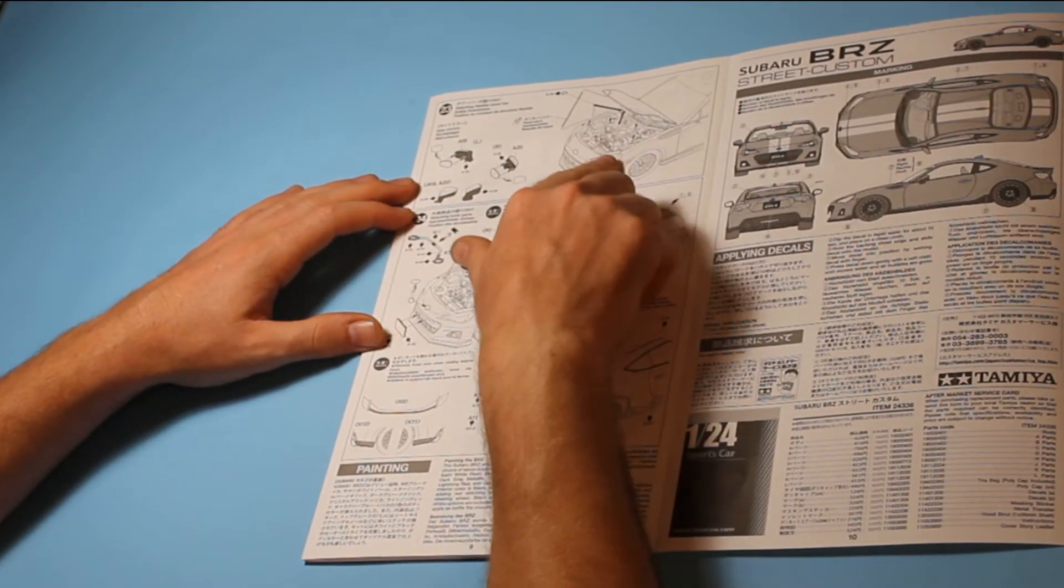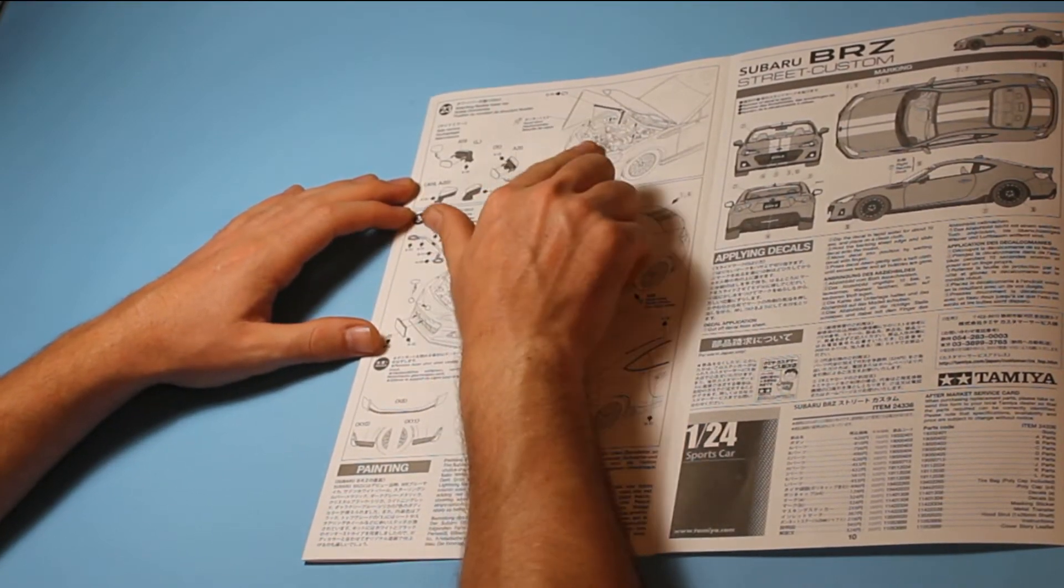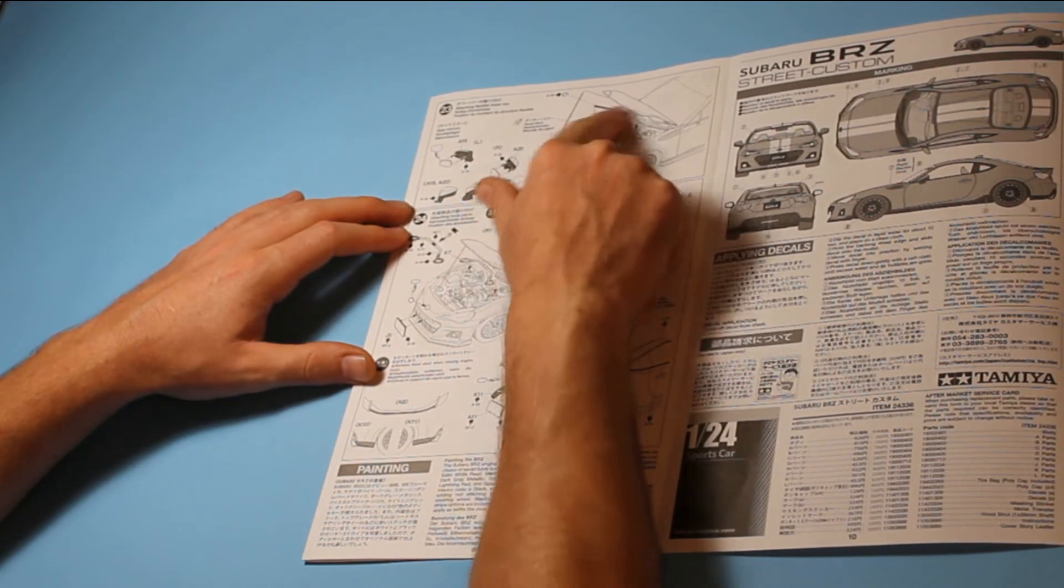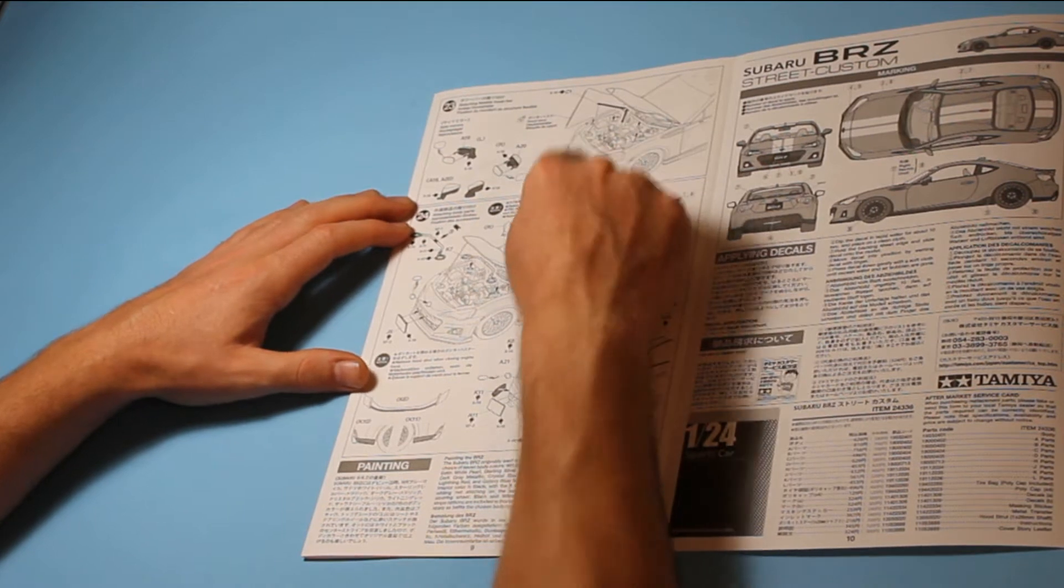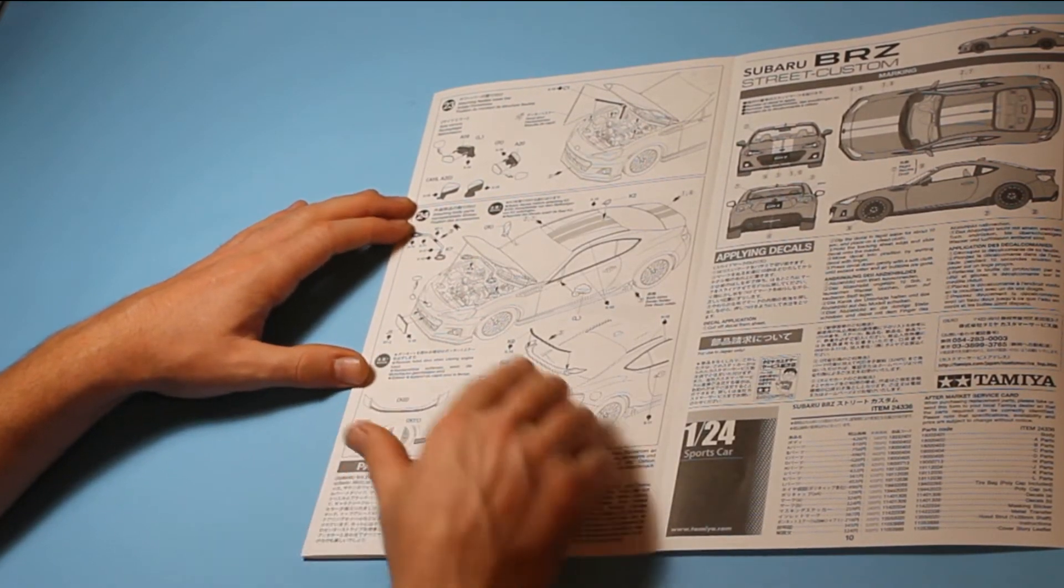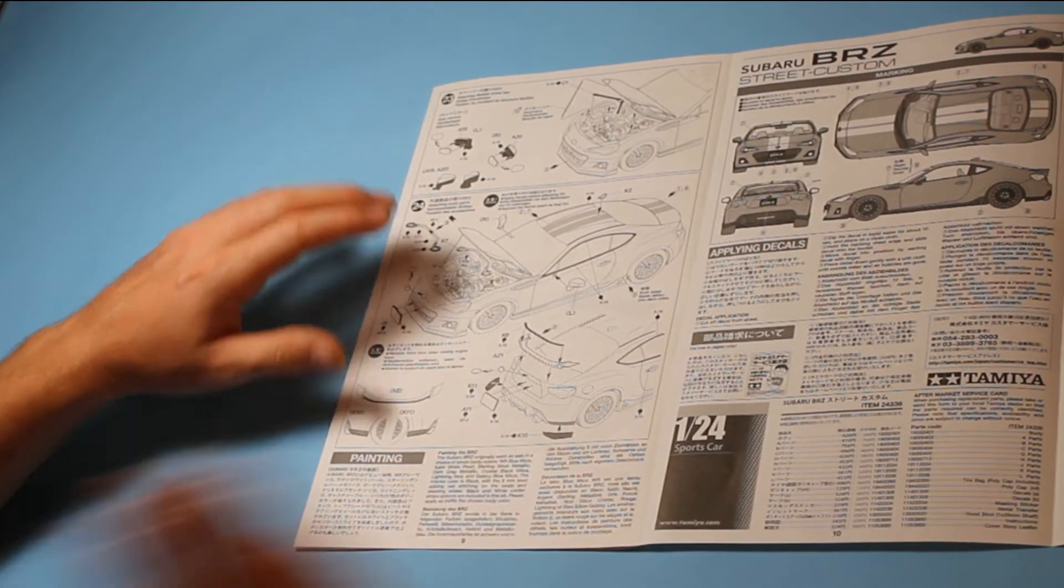And then we're getting to the end of the build here with wing mirrors and flexible tow bar. You also get a hood strut which you can pose the hood up or down, and then finishing off parts of the engine and superstructure details with a spoiler going on and that completes the build.